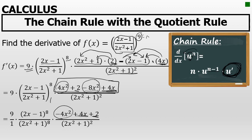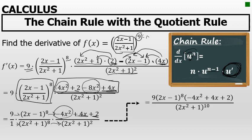I wrote the rest of the terms in the final factor's numerator in decreasing degree — the plus 4x second and the plus 2 last. Additionally, I broke apart the second factor, which was the fraction to the power of 8, and applied that power of 8 to the numerator and denominator separately. That makes it easier on the last steps to multiply across the numerators and denominators. Across the numerators, I have 9 times 2x minus 1 to the eighth power times the entire quantity negative 4x squared plus 4x plus 2. In the denominators, I have the quantity 2x squared plus 1 to the eighth times that same quantity 2x squared plus 1 to the second. When you multiply the same base, 2x squared plus 1, you add the exponents, giving 2x squared plus 1 to the power of 10.